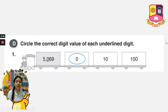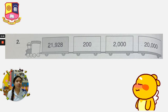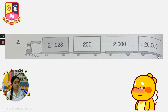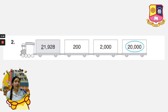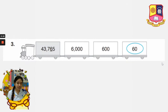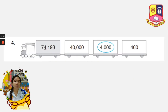In number 2, circle the correct digit value. We have 21,928. The underlined digit is 2, and it is in the 10,000 place. So that means it is 20,000. In number 3, we have 43,765. The underlined digit is 6, and it is in the 10s place. So the answer will be 60. And the last number, number 4, is 74,193.